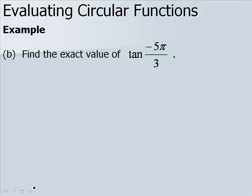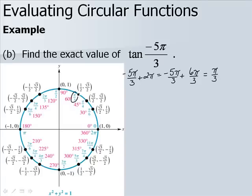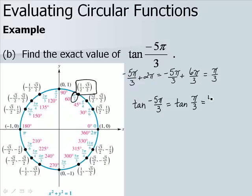Now let's find the exact value of the tangent of −5π/3. Since it's a negative angle, we need a coterminal angle between 0 and 2π. We add 2π: −5π/3 + 6π/3 = π/3. So π/3 is our coterminal angle, which is in quadrant 1. The tangent of −5π/3 equals the tangent of π/3, which is y over x: (√3/2) ÷ (1/2) = (√3/2) × (2/1) = √3.